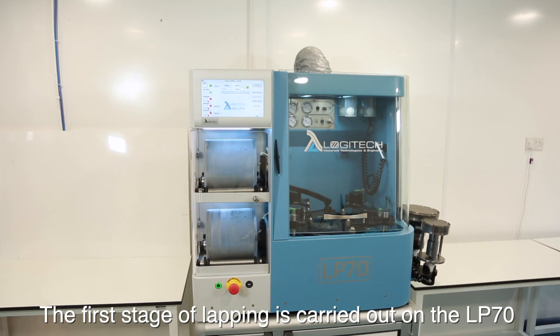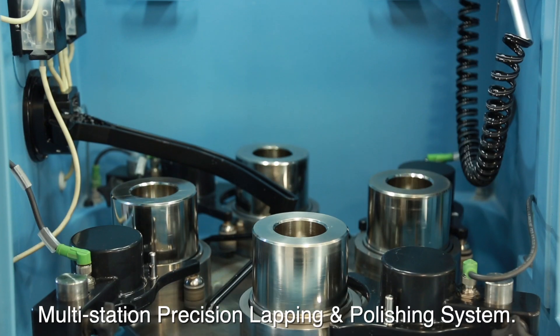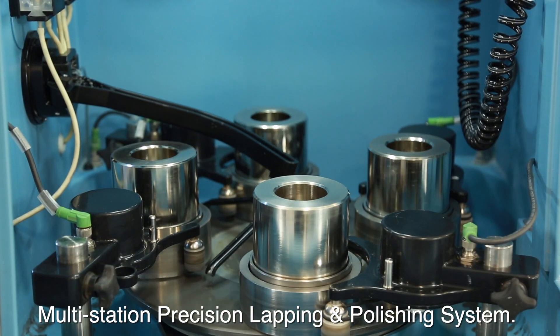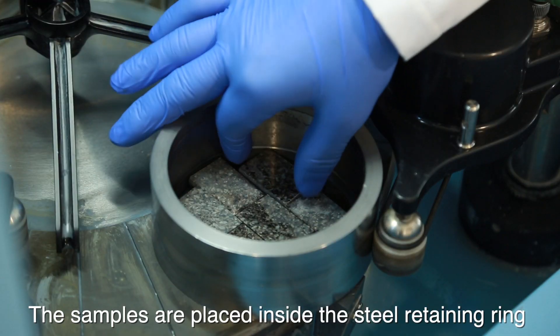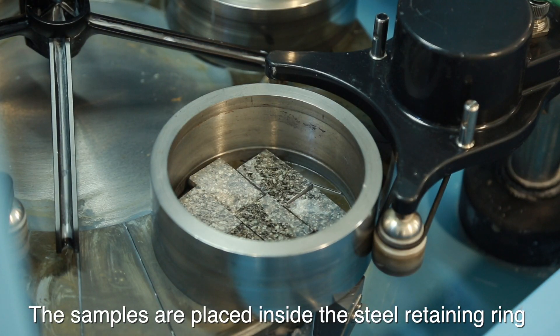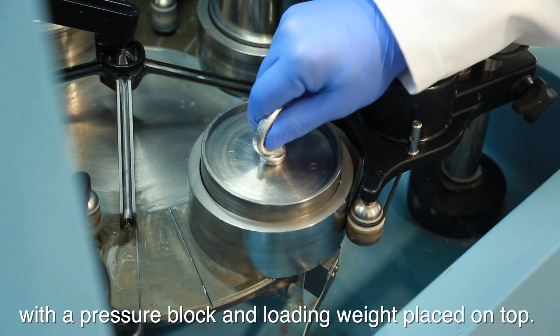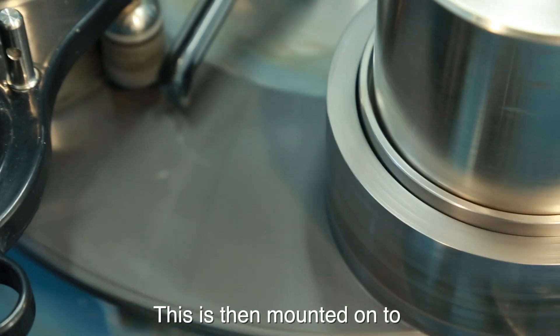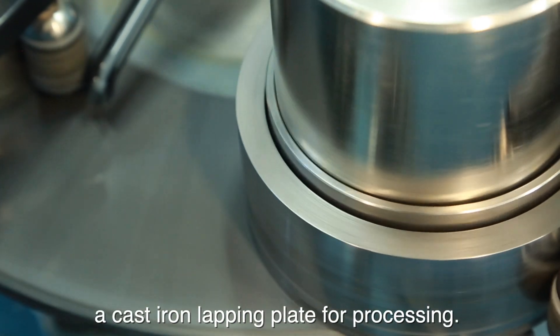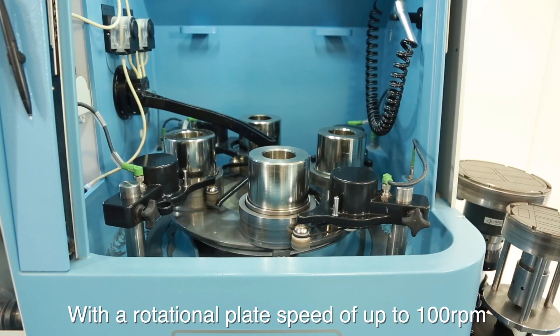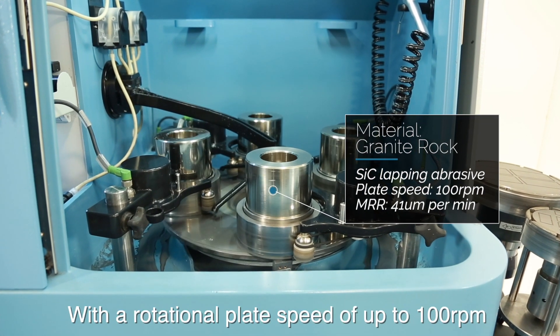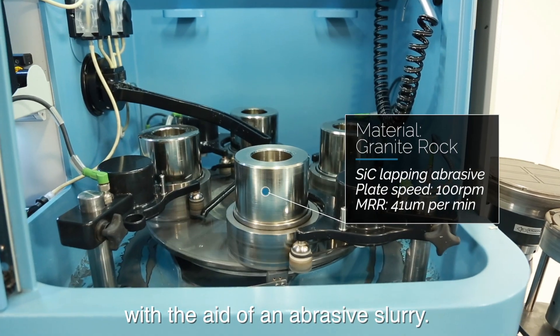The first stage of lapping is carried out on the LP70 multi-station precision lapping and polishing system. The samples are placed inside the steel retaining ring with a pressure block and loading weight placed on top. This is then mounted onto a cast iron lapping plate for processing with a rotational speed of up to 100 RPM with the aid of an abrasive slurry.